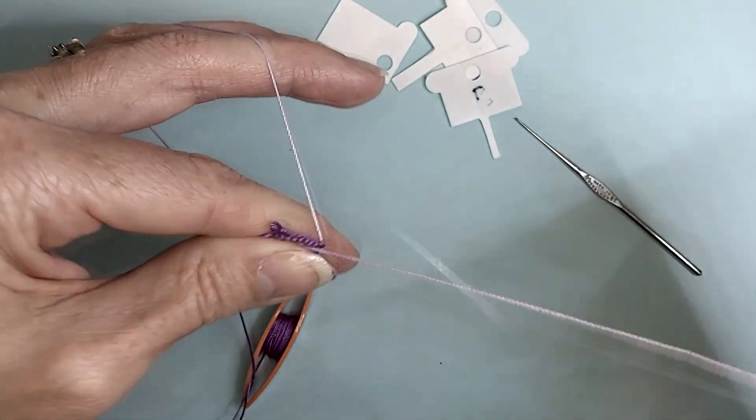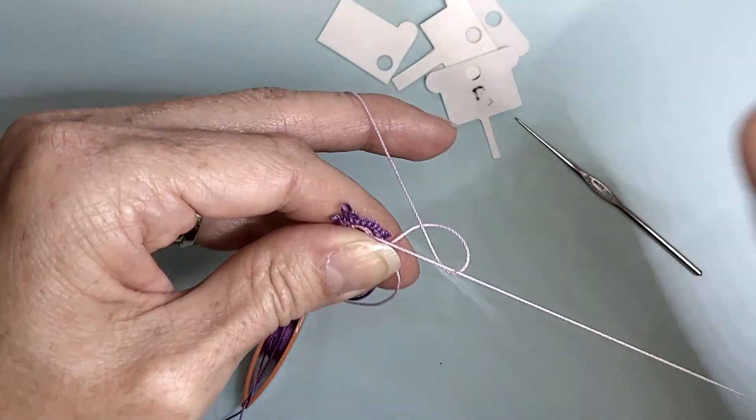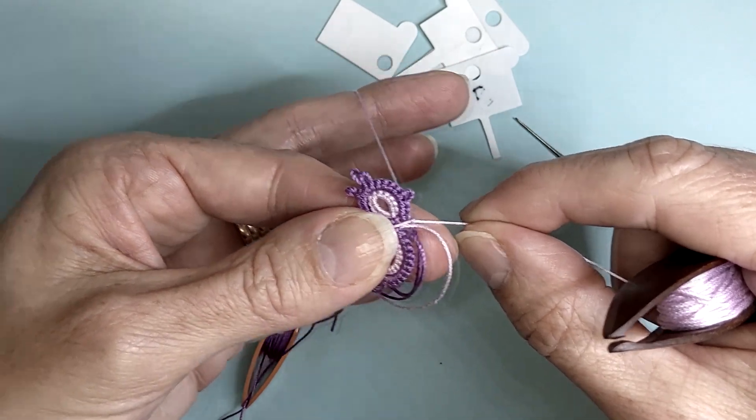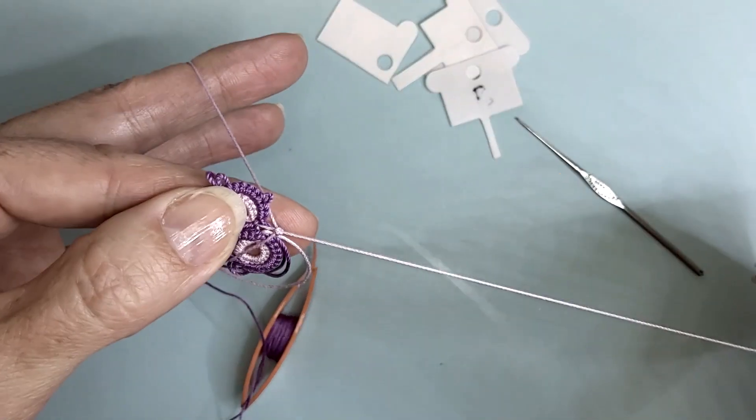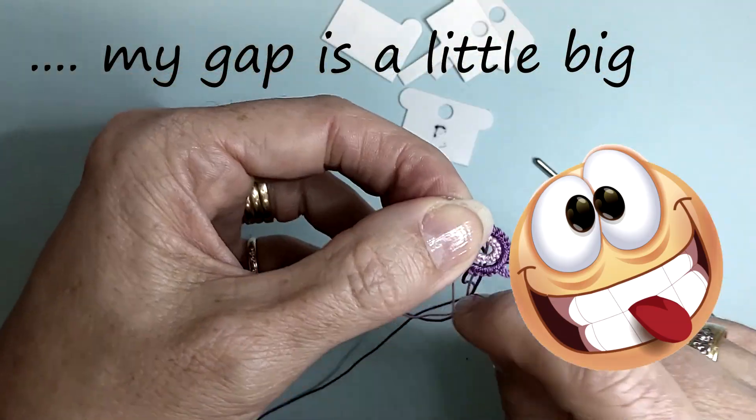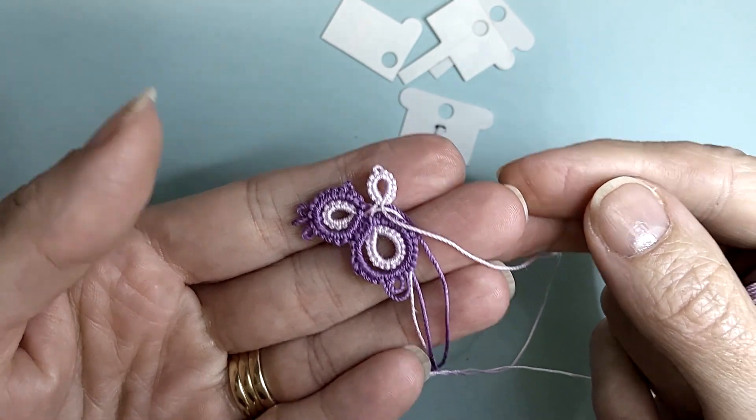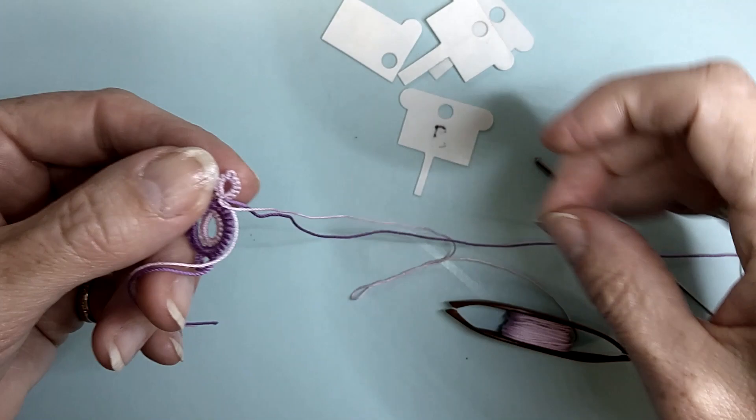Starting ring five using shuttle one, we're working six, joining picot and six, leaving that small gap between our rings. Turning your work and swapping the shuttles.